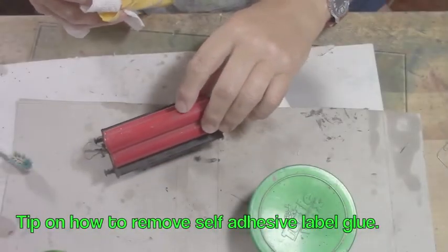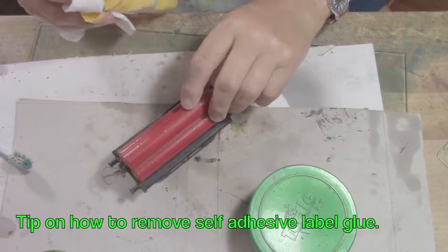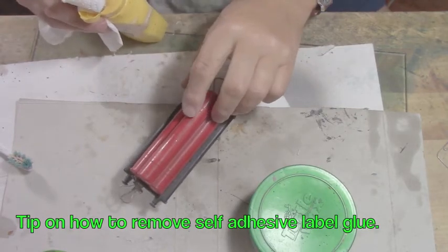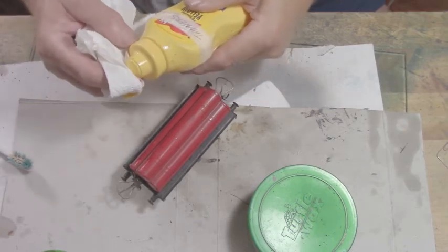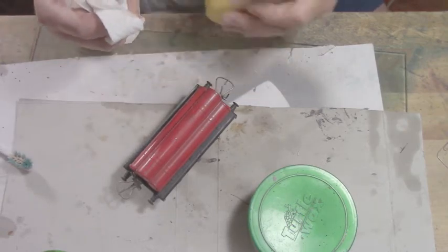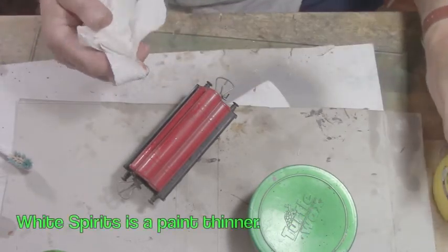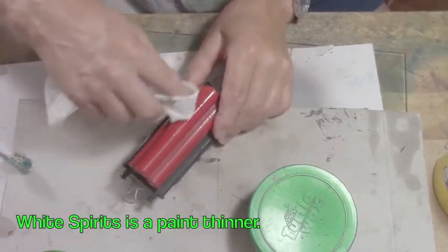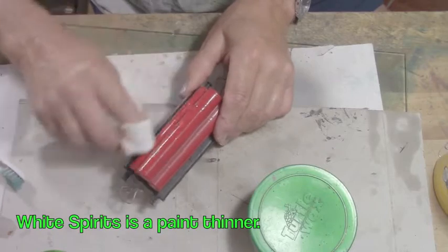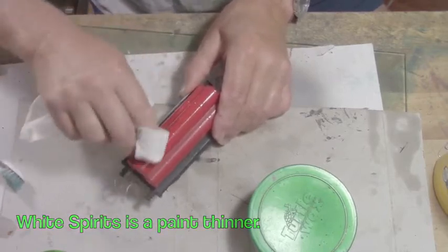So if you get label marks, self-adhesive label marks, they always do this, they stick them on there. And that's got an acetone which will damage it. So what you do is, this is in a mustard bottle just so it doesn't spray too much. Take a little bit of white spirits and just wipe it and voila, it's gone.